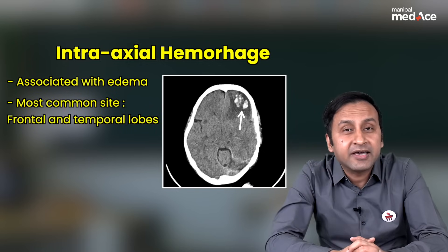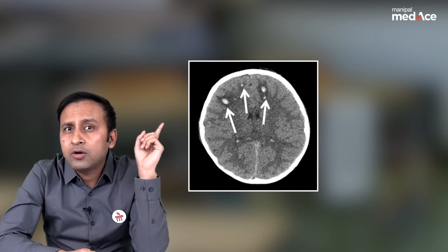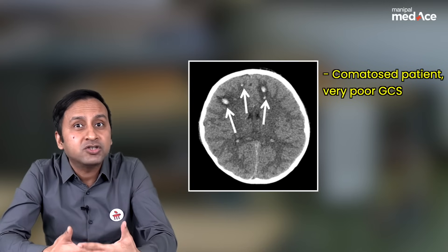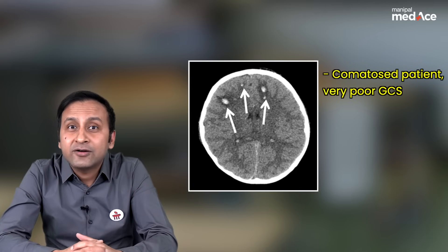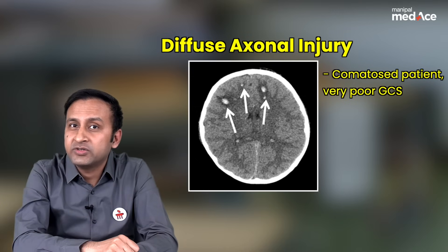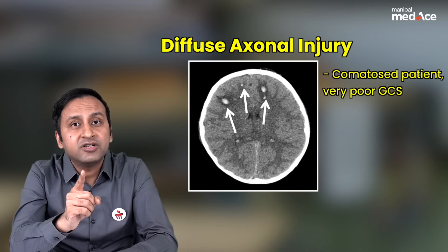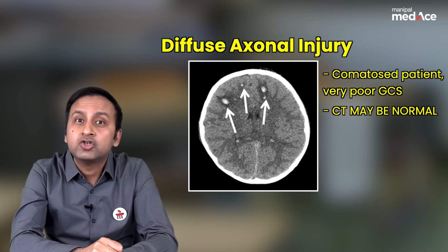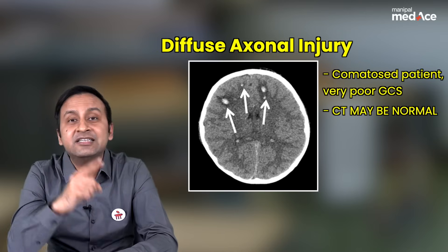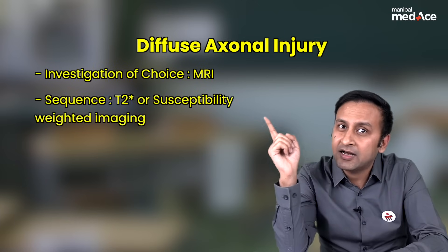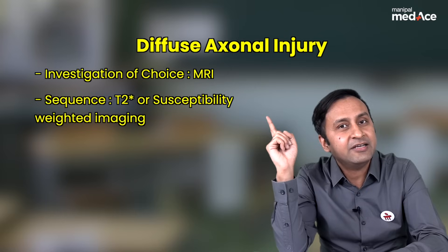Now, coming to this special case. You can see multiple small bleeds which are located at the gray-white matter junction interface. If this patient is comatosed and having a very poor GCS, your diagnosis is going to be diffuse axonal injury. Some important points about diffuse axonal injury: CT findings are minimal — many a times, CT can be normal. The investigation of choice in diffuse axonal injury is MRI, and the specific sequence used is either a gradient sequence like T2-star or susceptibility-weighted imaging.